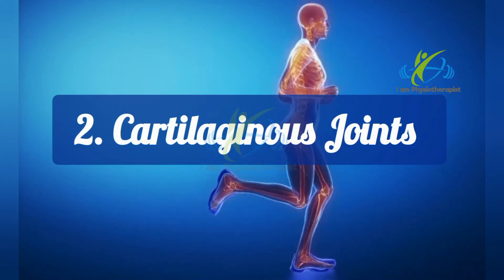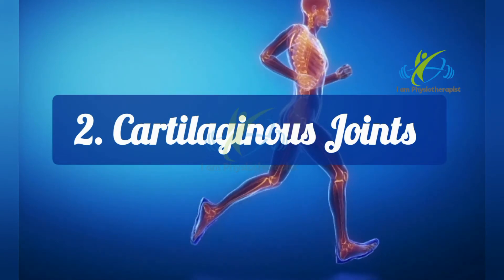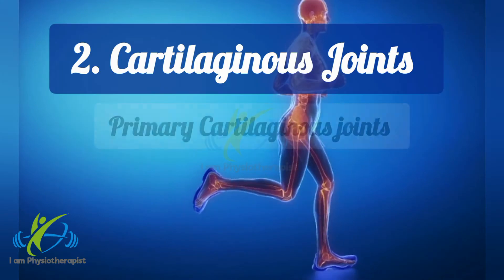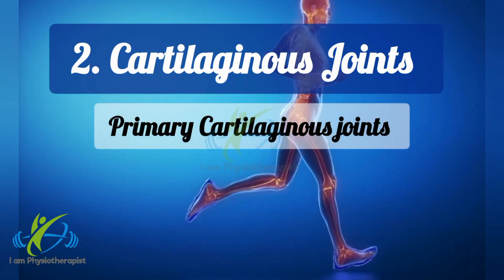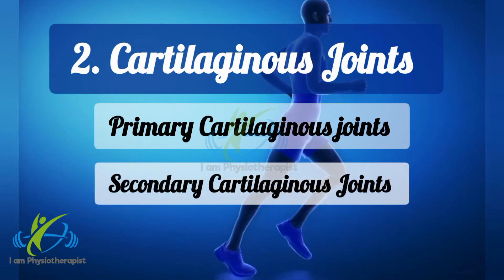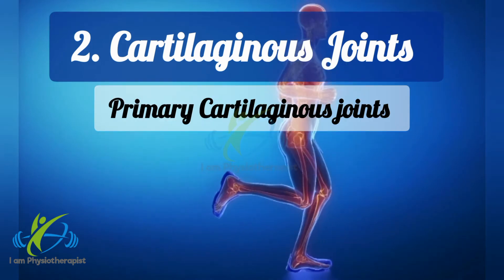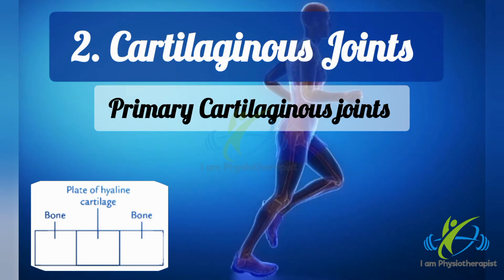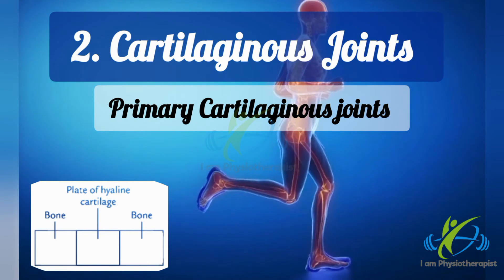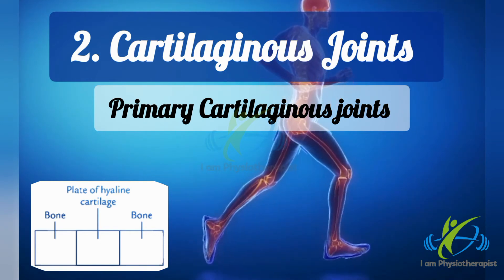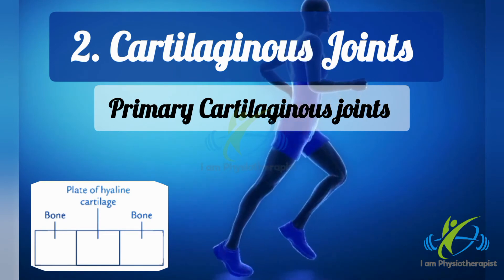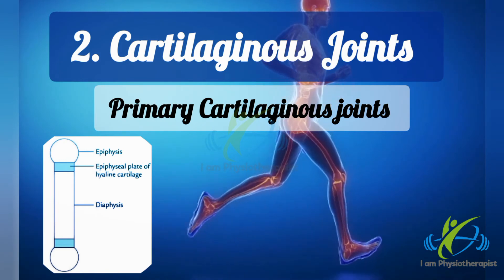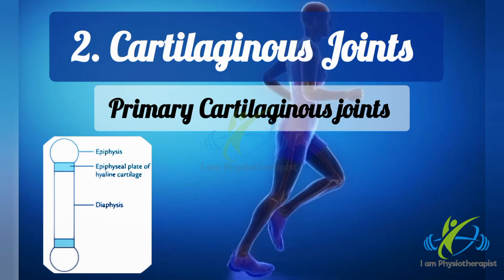Cartilaginous joints: bones are united by cartilage and these joints lack a joint cavity. They are of two types: primary cartilaginous joints, also known as synchondrosis, and secondary cartilaginous joints or fibrocartilaginous joints. In primary cartilaginous joints, bones are united by a plate of hyaline cartilage so that the joint is immovable and strong. These joints are temporary in nature because after a certain age the cartilaginous plate is replaced by bone. Examples include the joint between epiphysis and diaphysis of a growing long bone, spheno-occipital joint, first chondrosternal joint, and costochondral joints.